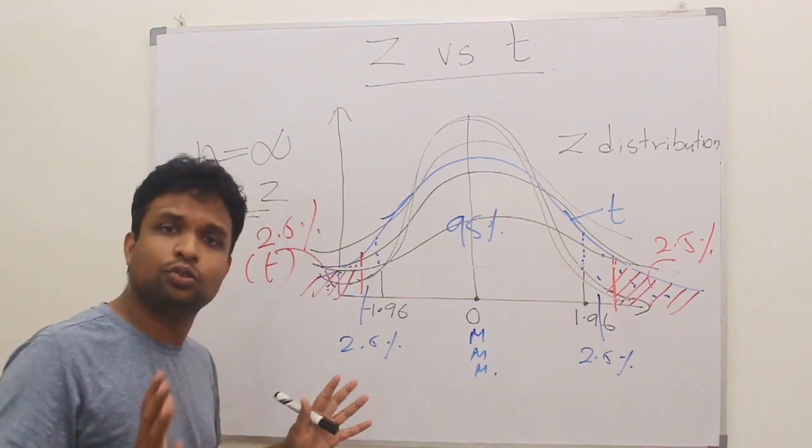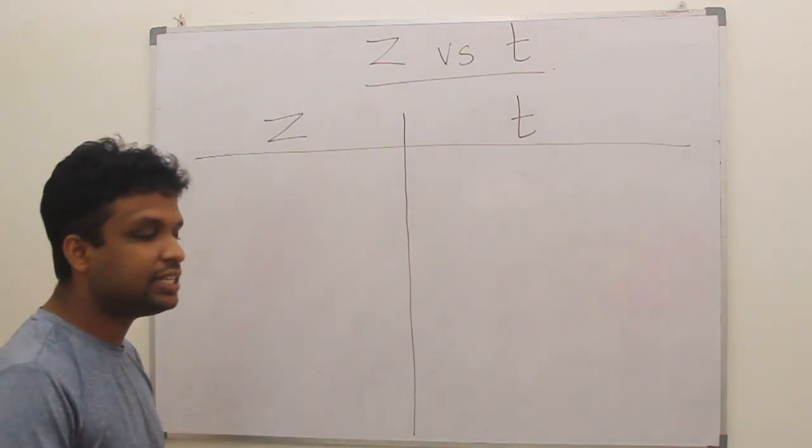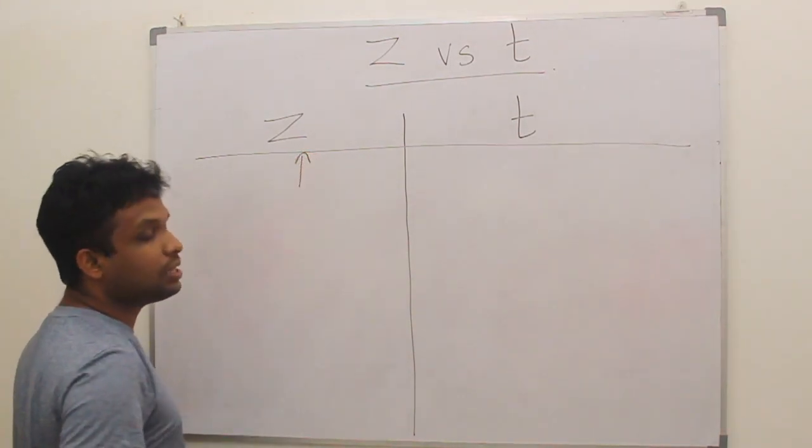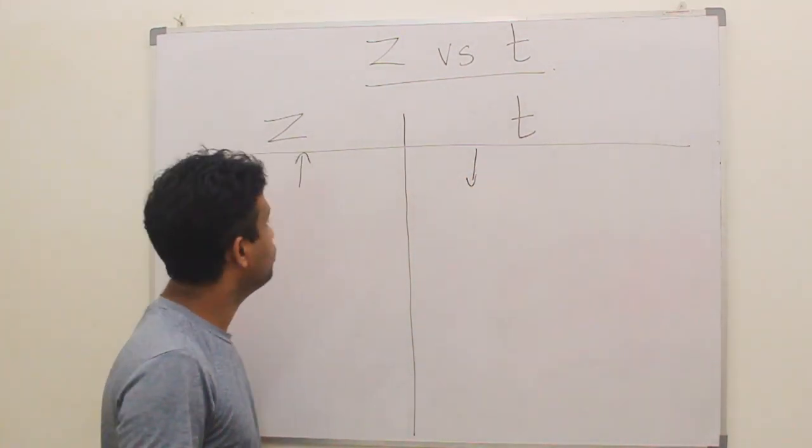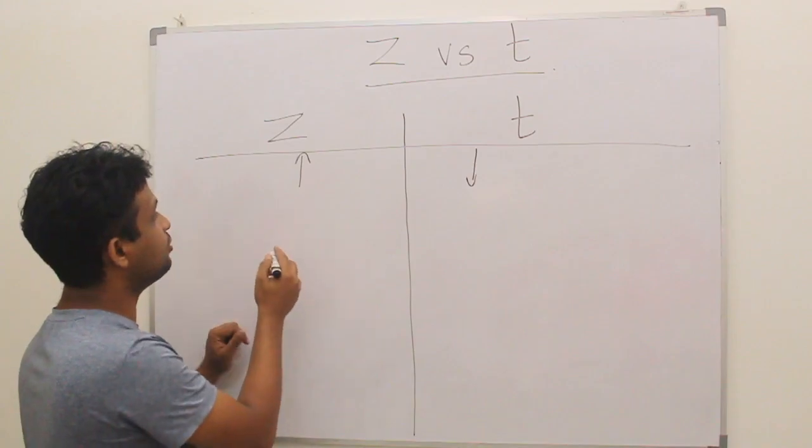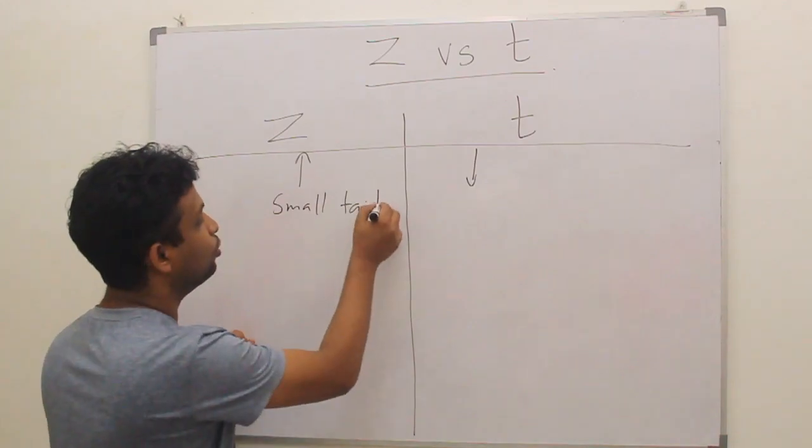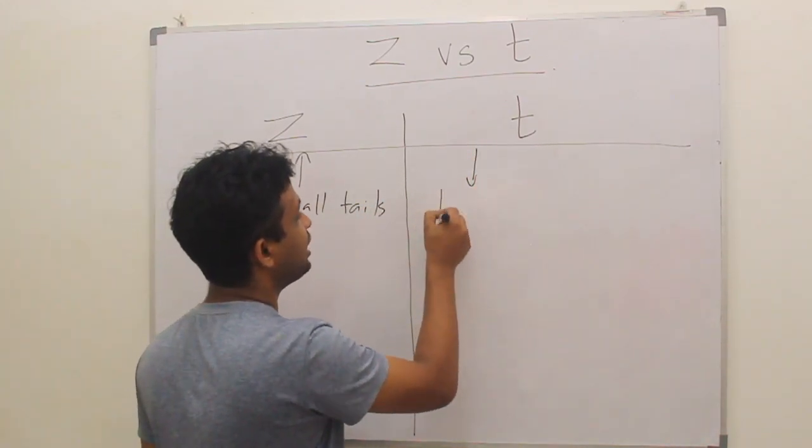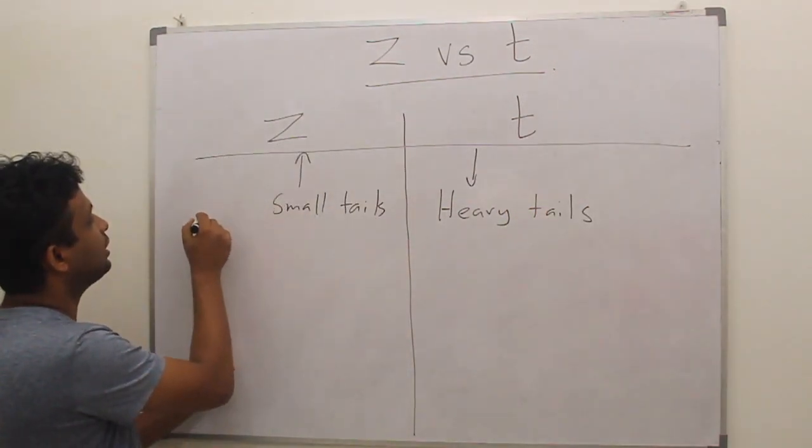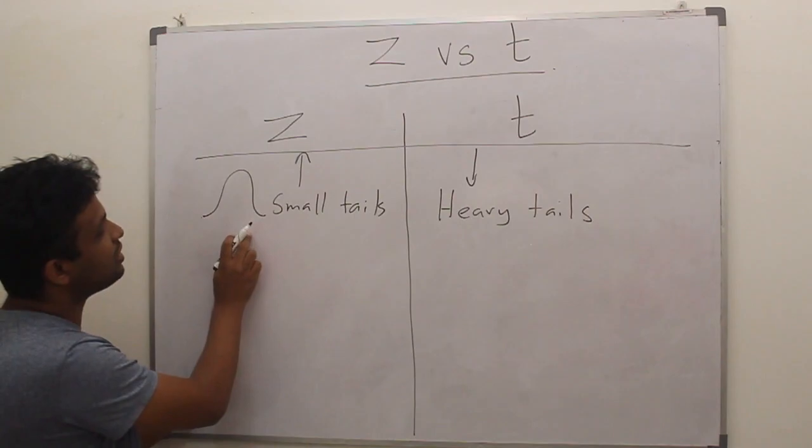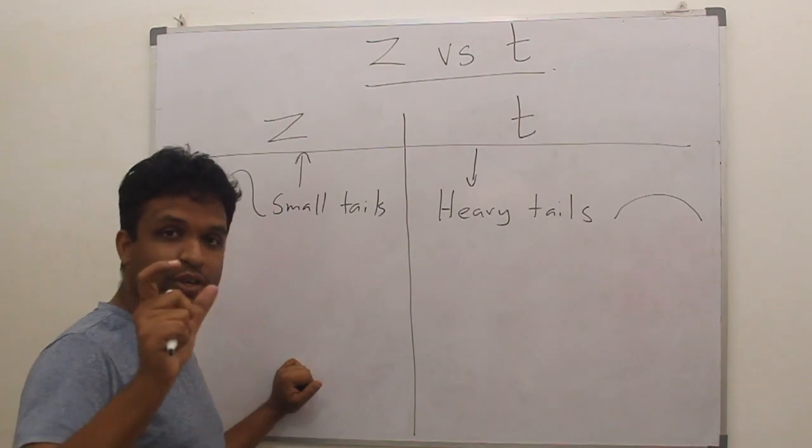Let's compare the two distributions. What is the difference between Z and T? As I told you earlier, this is for high sample sizes and this is for low sample sizes. Also, Z-distribution has small tails compared to T-distribution, where T-distribution has heavy tails.